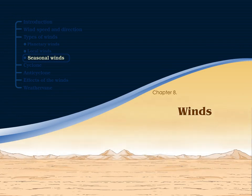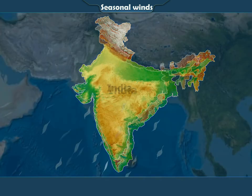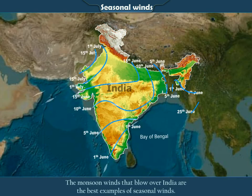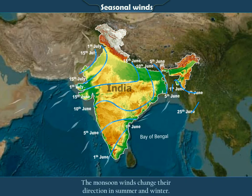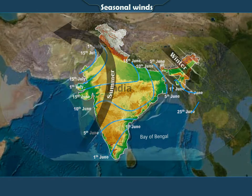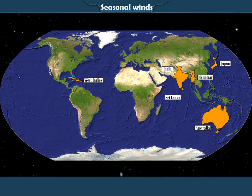Seasonal Winds. Winds that blow in particular seasons are called seasonal winds. The monsoon winds that blow over India are the best examples of seasonal winds. The monsoon winds change their direction in summer and winter. India, Sri Lanka, Myanmar, Japan, the West Indies, and Australia receive rain from monsoon winds.